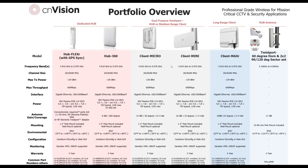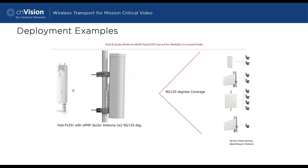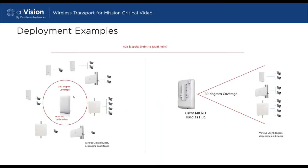Some deployment examples: the Hub FlexR combined with an antenna and twist-board adapter gives 60-degree coverage in a hub-and-spoke point-to-multipoint scenario, with each client supporting multiple cameras. You can use wider 90 or 120-degree antennas from Cambium similarly. If the hub is on a rooftop looking down a street, you can pick up cameras along the way and backhaul them. The Hub 360 gives wide coverage across a full circle, or you can take a Micro reconfigured as a hub for 30-degree azimuth horizontal coverage to pick up subscribers.